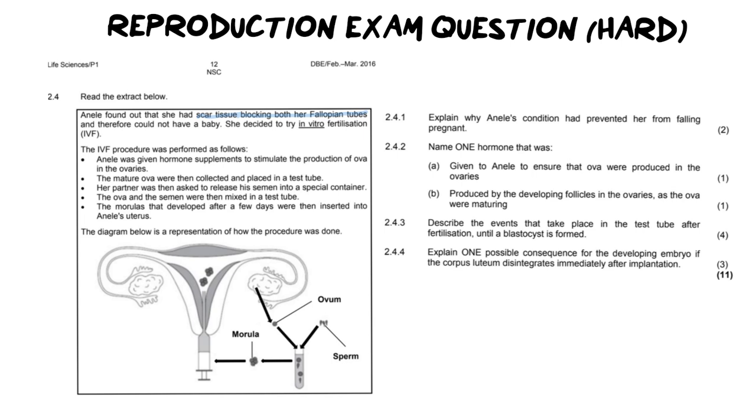She decided to have what we call in vitro fertilization or IVF and in vitro fertilization refers to fertilization that happens inside of a test tube. So it says the procedure was performed as follows. It says Anele was given hormone supplements to simulate the production of ova in the ovaries. The mature ova was then collected and placed in a test tube. Her partner was then asked to release his semen into a special container. The ova and semen were then mixed together in a test tube. That's what in vitro means. And the morulas that developed after a few days were then inserted into Anele's uterus. And the diagram below is a representation of how this procedure is done.